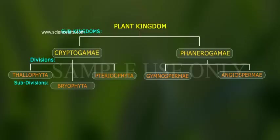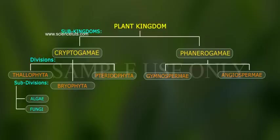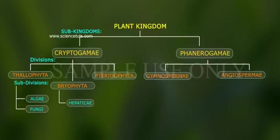Division Thallophyta includes two classes: Class I, Algae, and Class II, Fungi. Division Bryophyta includes two classes: Class I, Hepaticae, and Class II, Musci.